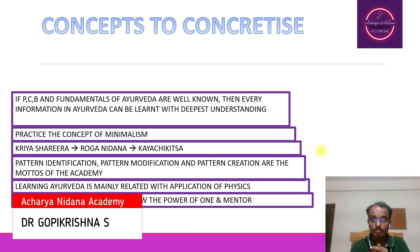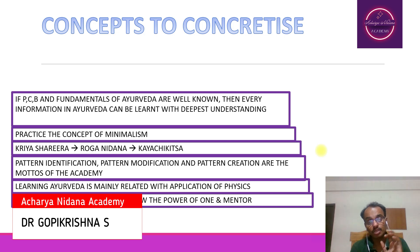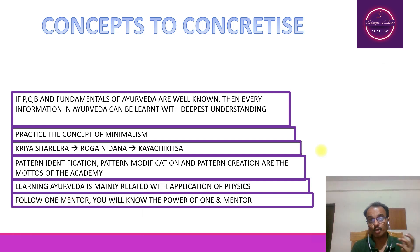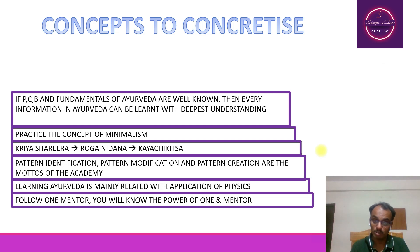From that particular small topic, we are going to understand from the point of Rachana Sharira, from the point of Kriya Sharira, from the point of Roga Nidana, from the point of Dravya Guna Vidhyana, from the point of Rasa Shastra Bhaishajya Kalpana, from the point of Agada Tantra, from the point of Swasthavritta, from the point of Kayachikitsa, from the point of Shalya Tantra, Shalakya Tantra, from the point of Prasuti Tantra, Kaumarabhritya, etc. So that means one particular small topic we are going to learn from multiple angles. Then deepest understanding is possible.